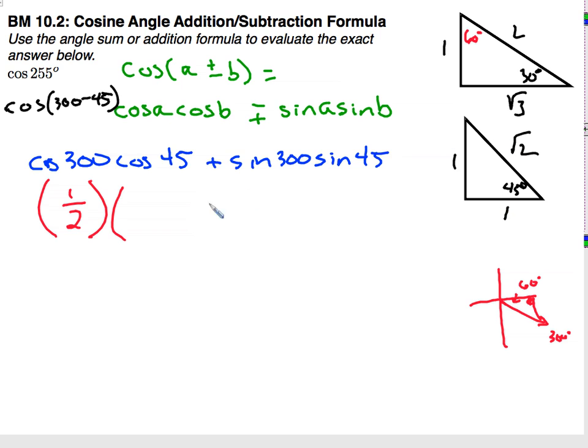Cosine of 45, 1 over square root of 2, which is square root of 2 over 2.